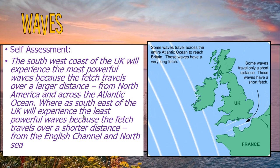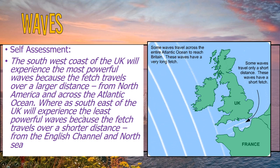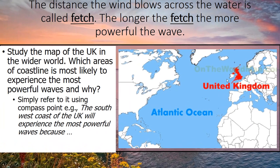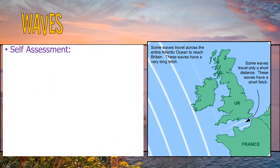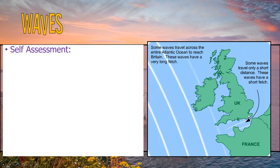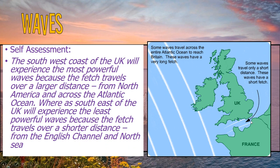Hopefully we're getting something like that on our piece of paper. The southwest area of the UK has a large body of water — the Atlantic Ocean — so potentially the fetch could extend all the way from North America to the UK, making those waves more powerful. Whereas the eastern side of the UK, the southeast specifically, has a much shorter fetch because the distance the water can travel over the English Channel is very small.